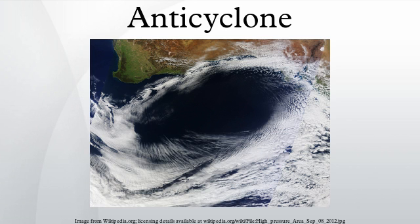Mid-tropospheric systems: The circulation around mid-level ridges, and the subsidence of their center, act to steer tropical cyclones around their periphery. Due to the subsidence within this type of system, a cap can be set up which inhibits the development of free convection. This limits thunderstorm activity near their center and traps low-level pollutants such as ozone as haze under their base, which is a significant problem in large urban centers during summer months such as Los Angeles, California and Mexico City.